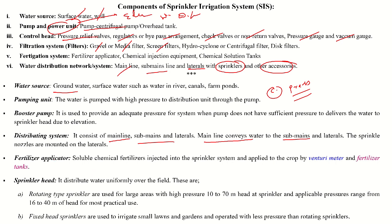For fertilizer application, soluble fertilizers such as NPK — nitrogen, phosphorus, and potash — and other micronutrients like zinc, manganese, or any other soluble fertilizer can be applied through the sprinkler system using a venturimeter and fertilizer tank.